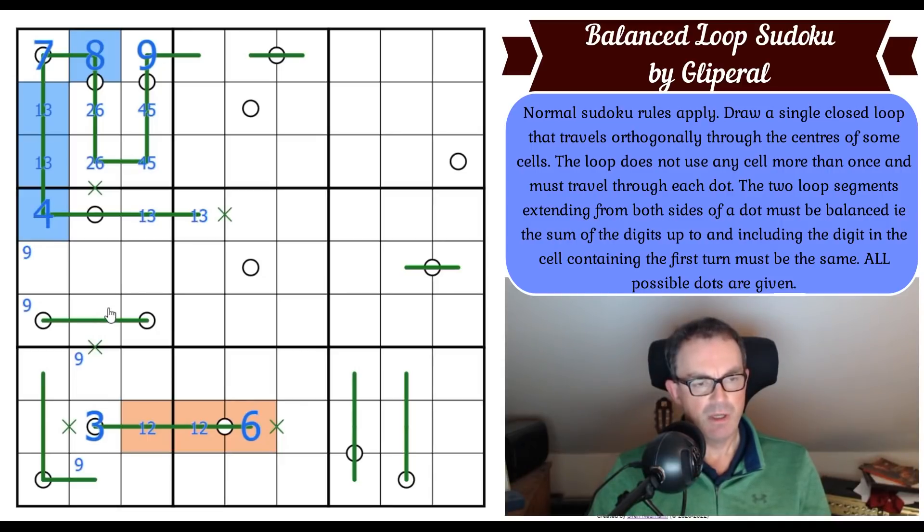There's a completely logical way through it, and actually it's not that easy to show that this loop segment is forced. I studied this for about five or ten minutes, and I think the best way of doing it is to consider whether this can be a nine. That's probably the easiest way to do it.